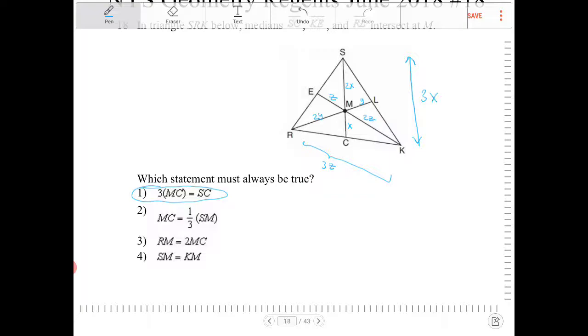RM is equal to 2MC, RM and MC. Because RM is on a different median compared to MC, we cannot justify whether or not that relationship that they're saying there in option three is correct.